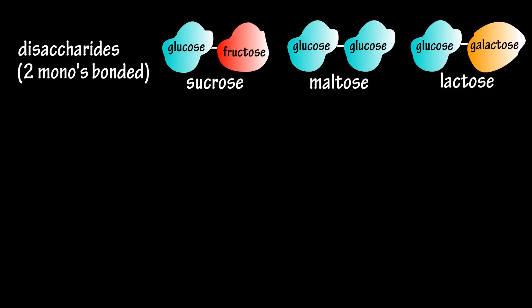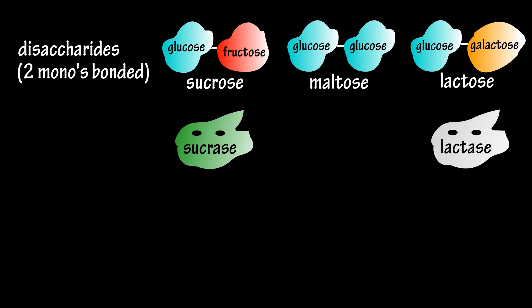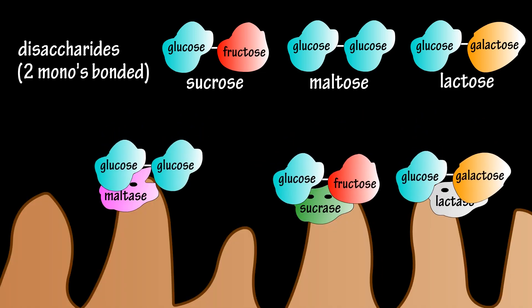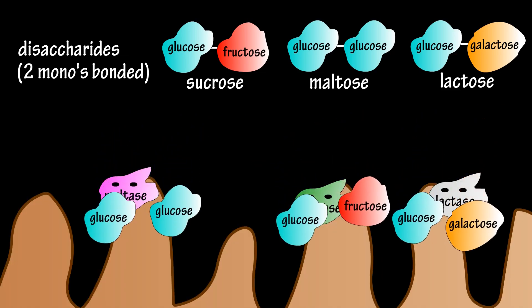Now for the two-unit disaccharides, which the ice cream cookie sandwich had a ton of. The three main disaccharides are sucrose, or sugar, which is comprised of a glucose molecule and a fructose molecule; lactose, which is galactose and glucose; and maltose, which is two glucose units. The enzymes that act on these are sucrase, lactase, and maltase, which are also located on the brush border of the enterocyte cells. So basically the body breaks down these carbohydrate molecules into glucose, fructose, and galactose units.